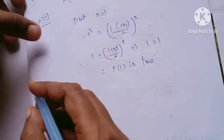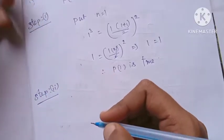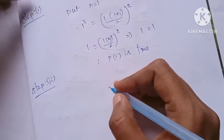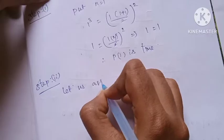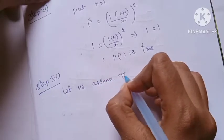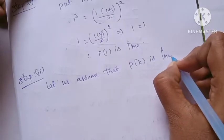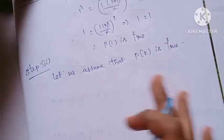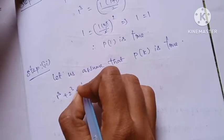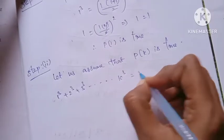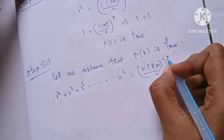Step 2: Assume that P of k is true. So 1 cube plus 2 cube plus 3 cube, up to k cube, is equal to k into (k plus 1) by 2, the whole square.